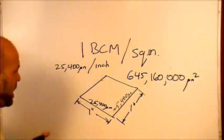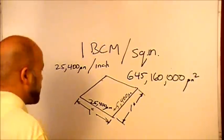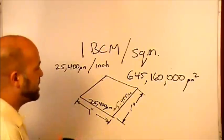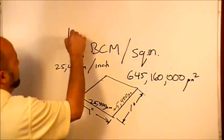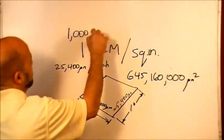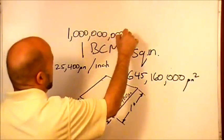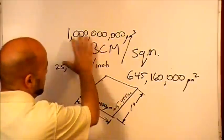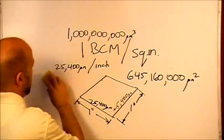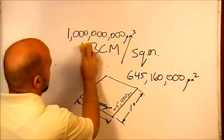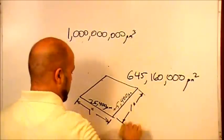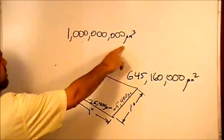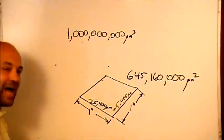So now, but here's the thing: we want to figure out how thick that is. One BCM, well that's 1 billion microns cubed. So if that's the volume we have in a BCM, what we need to do is divide the total volume by the area, and it'll tell us the height of that square inch, the film thickness of that square inch.